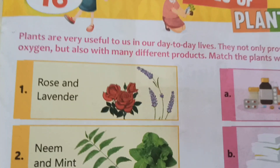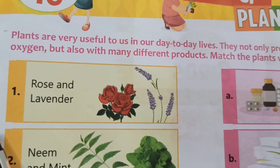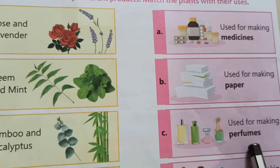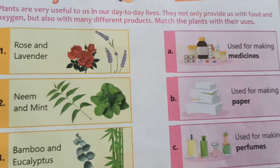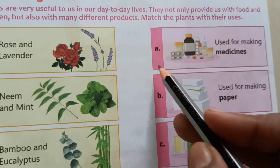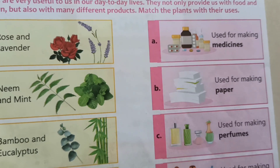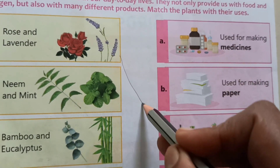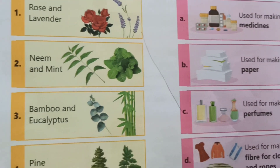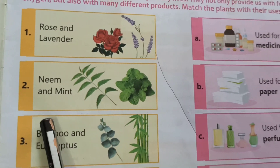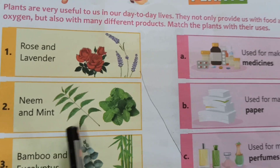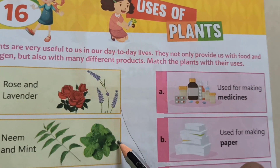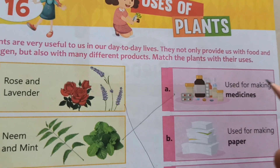Kids, then we match here. First one, rose and lavender — we use them for perfumes, because their smell is so beautiful. So A matches C. Next, neem and mint — it is used for medicines. So second one matches A.